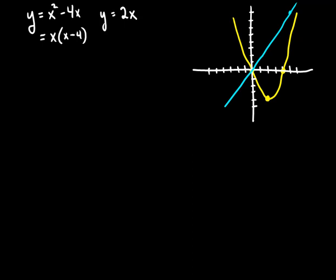We set up the equation x squared minus 4x equals 2x, subtracting over. We see that we'll have points of intersection at 0 and at 6.